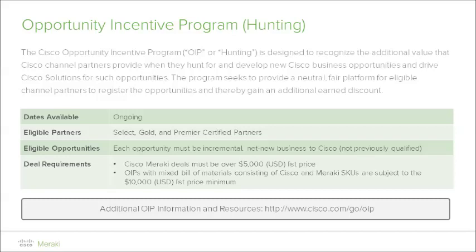This does not include partners at the registered status level. There are various ways for a registered partner to attain the Select certification or beyond, and one of those ways is by passing the Cisco Express Networking Specialization. Assuming your partner organization has met that eligibility level, the deal must be recognized as incremental net new business to Cisco — in other words, it cannot have been previously qualified.